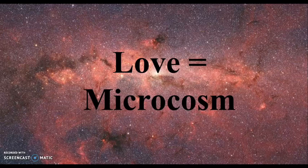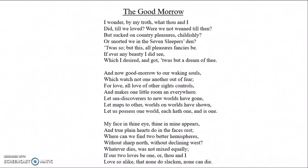In Donne's poetry, the love shared by two lovers is often presented as a microcosm — like a little world in itself, divided from the rest of society. Donne's poem 'The Good Morrow' is really useful for illustrating this idea.